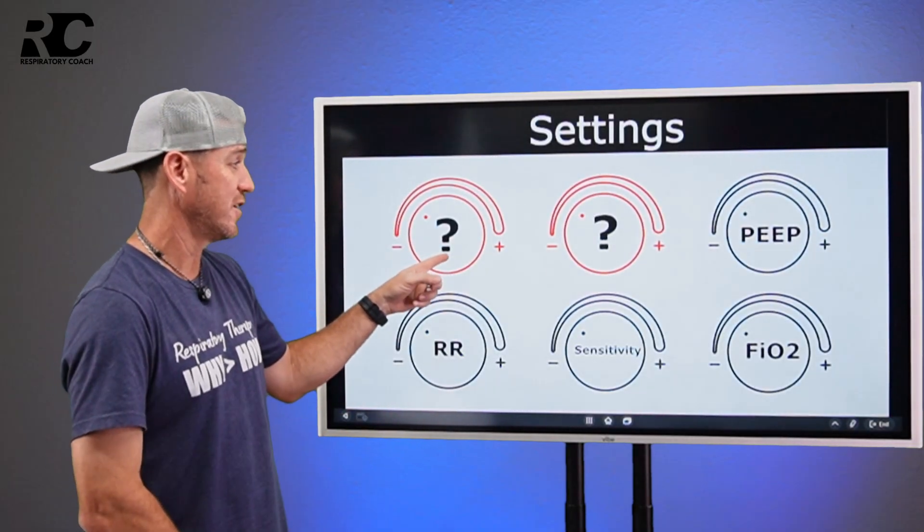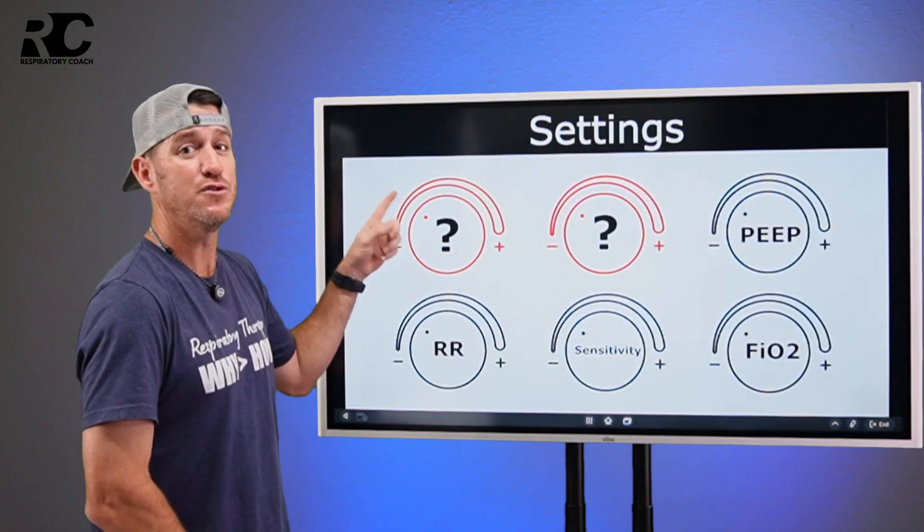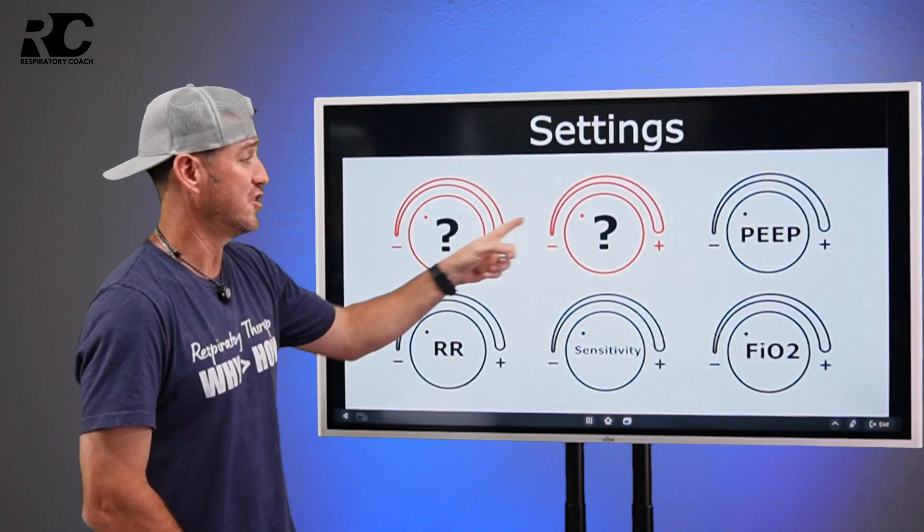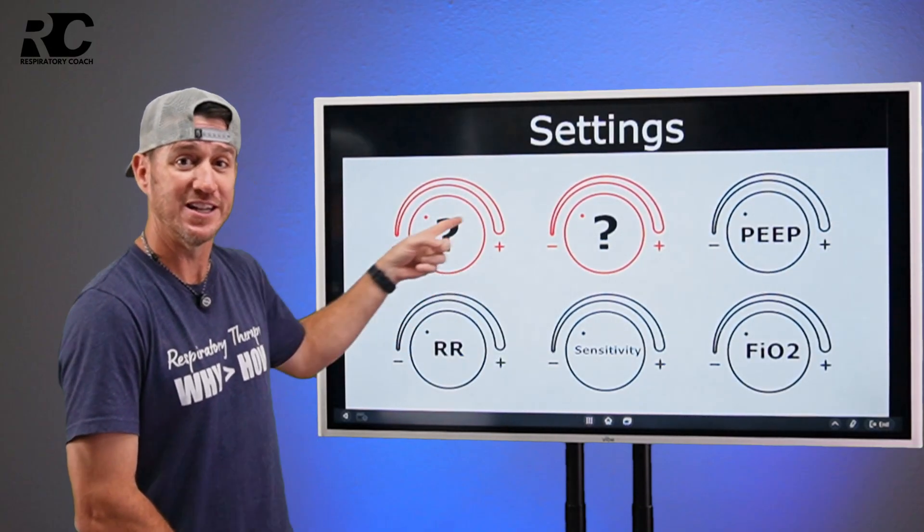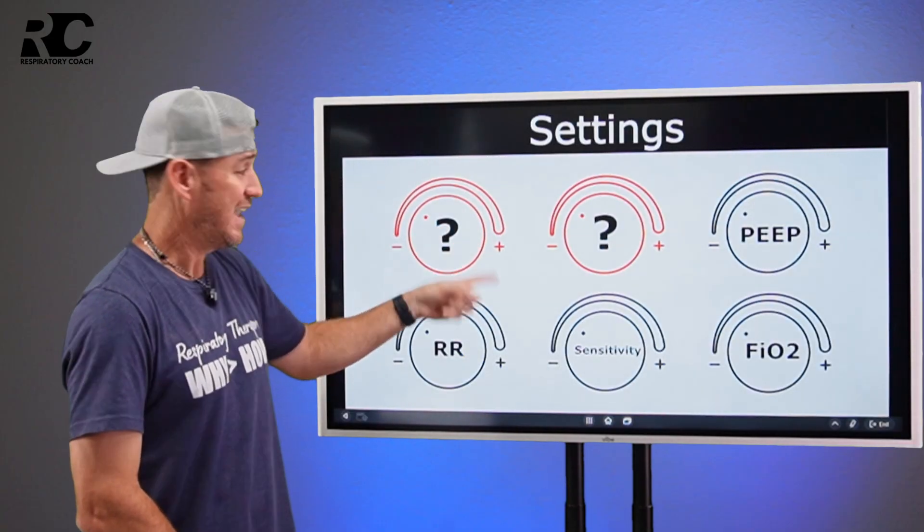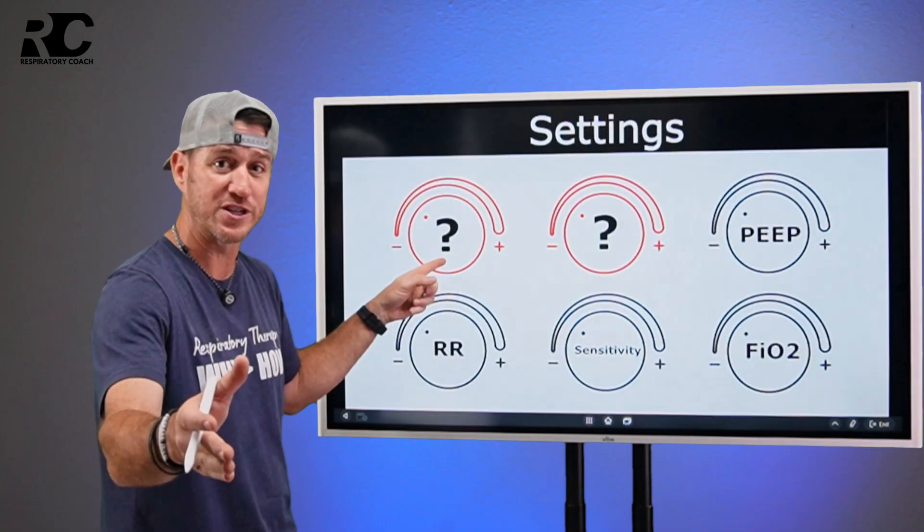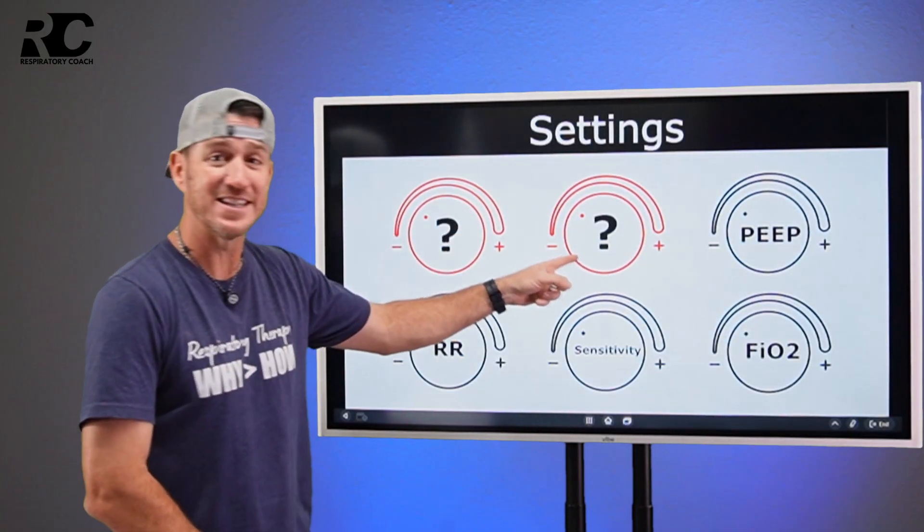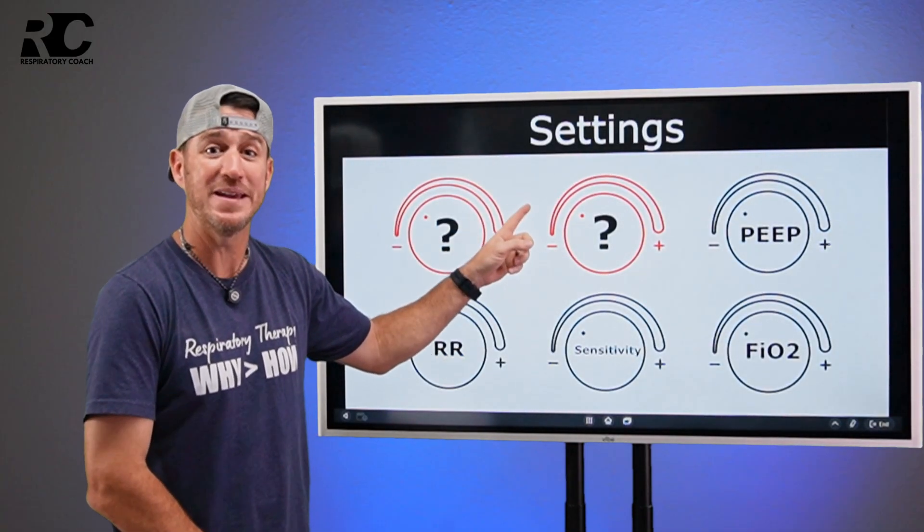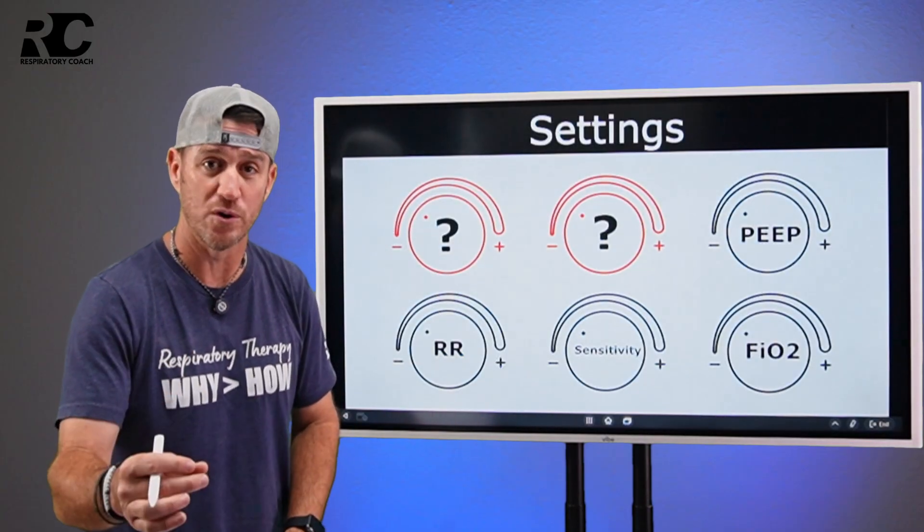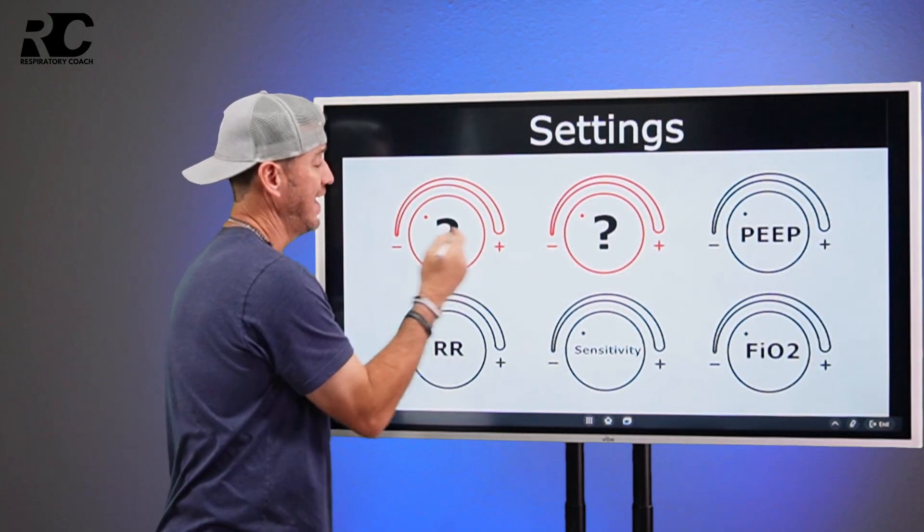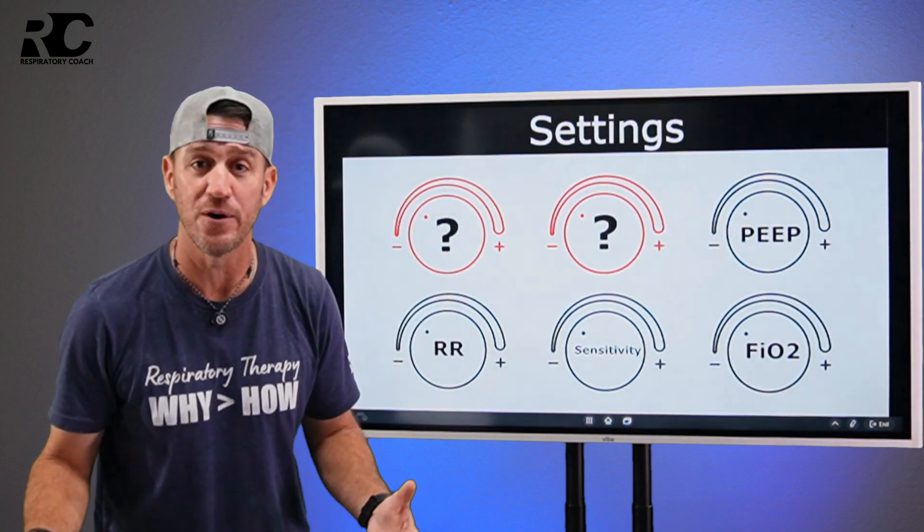If this says tidal volume, then you know you're in volume and you're going to control how fast you're going to deliver that volume. If this says inspiratory pressure, then you know you're in pressure control and this is going to tell you this setting is going to be eye time, which controls how long that set pressure is held.